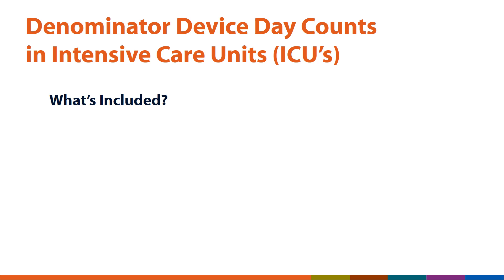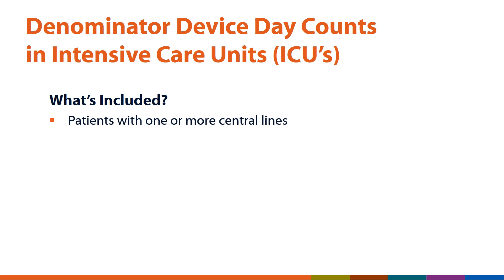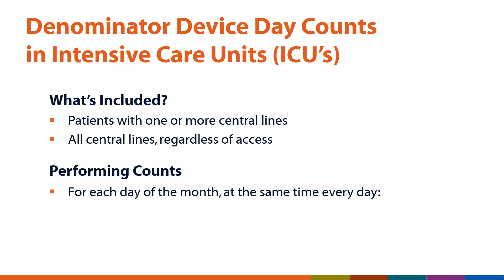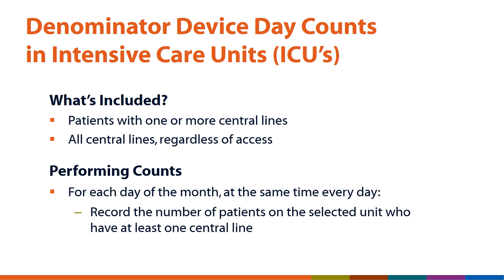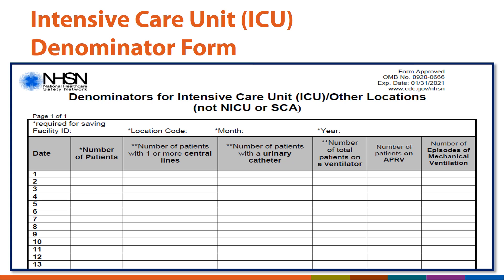Our final location is the intensive care unit or ICU. The denominator device day count includes all patients with one or more central lines at the time of the count, regardless of access. For each day of the month at the same time every day, record the number of patients with at least one central line. The denominator device day counts for central lines are recorded in the column highlighted for the number of patients with one or more central lines.